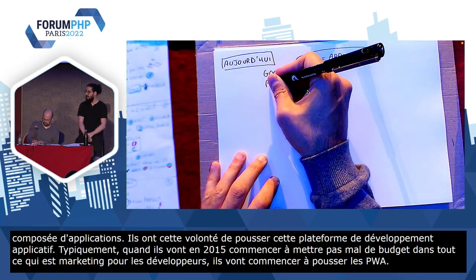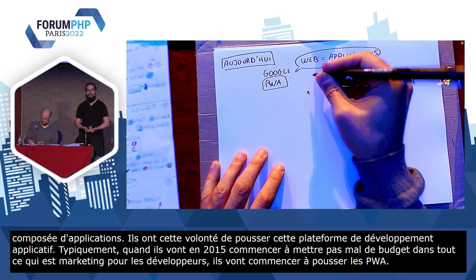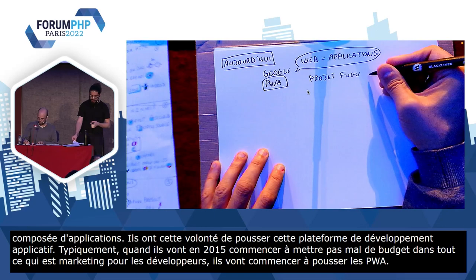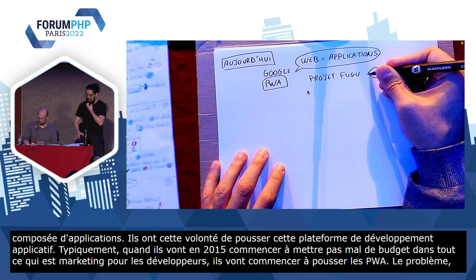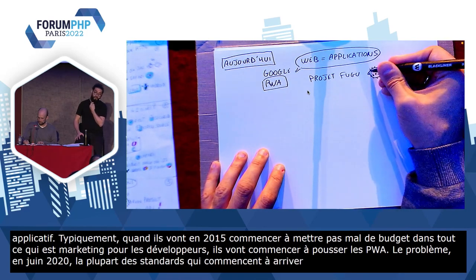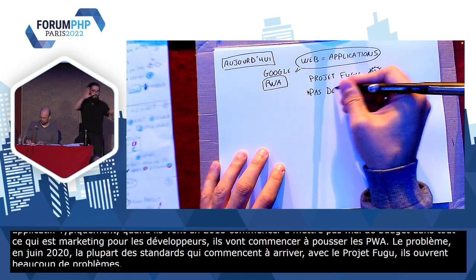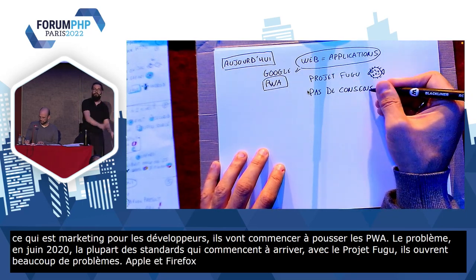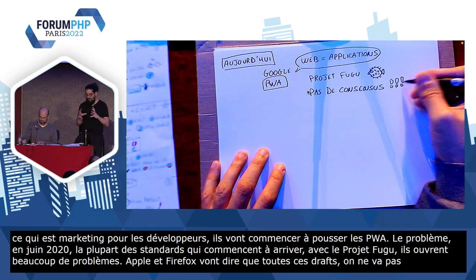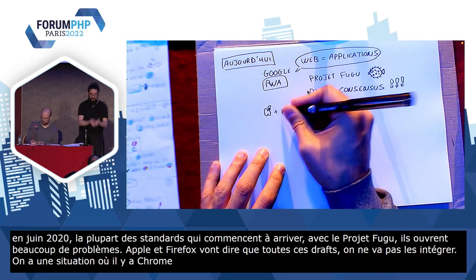Il y a le projet FUGU, qui permet surtout à Chrome d'avoir la mainmise sur la standardisation du Web et de pousser des standards avant qu'ils soient secs — les drafts. Et donc, le problème, c'est que ça est arrivé en juin 2020 — on arrive vraiment sur les trucs récents — la plupart des standards qui commencent à arriver dans le cadre du projet FUGU permettent de faire du fingerprinting, ils ouvrent beaucoup de problèmes. Et donc, Apple et Firefox vont dire non : toutes ces drafts-là, on les considère harmful, on ne va pas les intégrer. On a véritablement une situation où Chrome fait tout pour que ça aille le plus vite possible, tant pis pour les utilisateurs, tant pis pour leur vie privée, tant pis pour leurs droits.